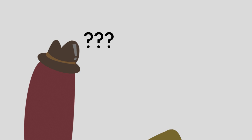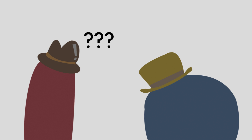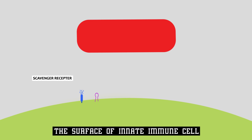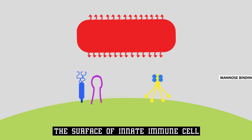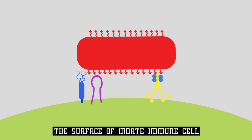Once the bacterium reaches the lung, the first innate immune cell that encounters the bacterium is the resident alveolar macrophage. There are pattern recognition receptors such as scavenger receptors and mannose receptors that recognize PAMPs on the bacteria surface and eventually attempt to kill the bacteria by the process called phagocytosis.